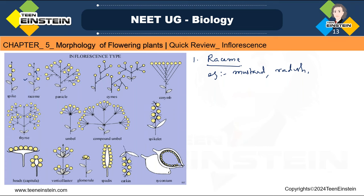In compound raceme, the peduncle is branched and on each branch flowers are arranged in acropetal way — older one is down and younger buds are at the top. Compound raceme is otherwise called panicle. You can see this in Cassia and Gulmohar, which are flowering right now in this season.